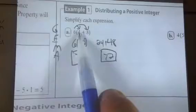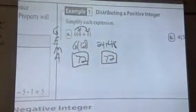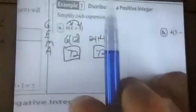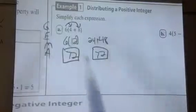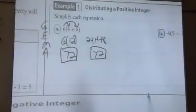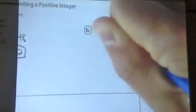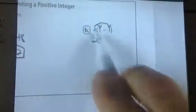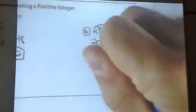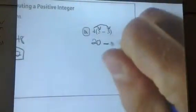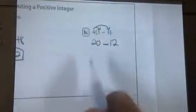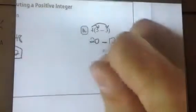The distributive property is most helpful when you've got variables. If this was A plus 8, I can't combine A and 8 because those are not like terms, so it would be helpful to use the distributive property. The distributive property works the same way as following order of operations. Here I've got 4 times 5 and 4 times 3. 4 times 5 is 20, 4 times 3 is 12. I bring down the subtraction sign in the middle, and 20 minus 12 gives me 8.